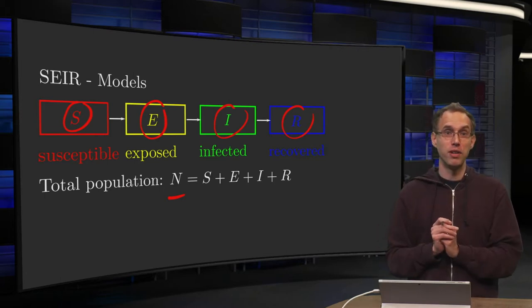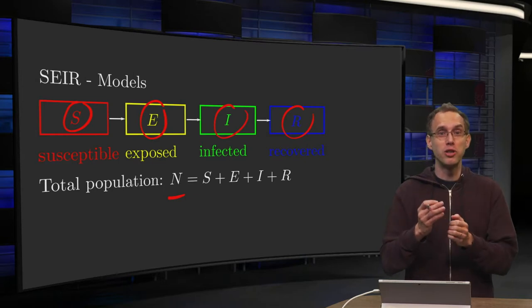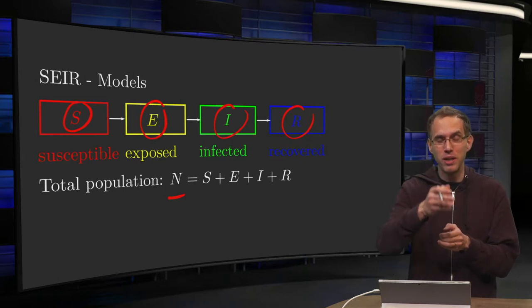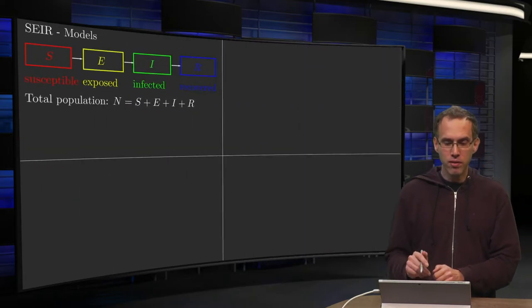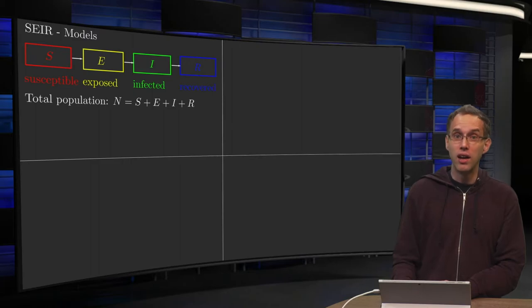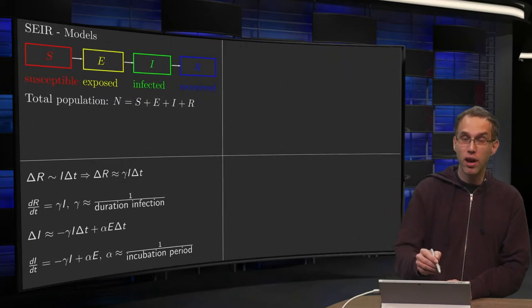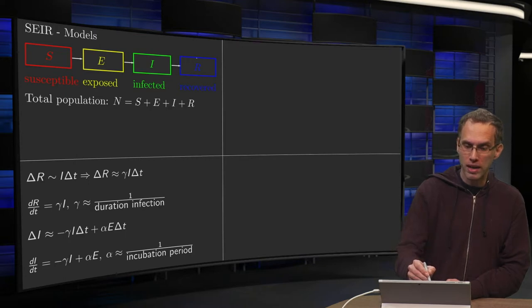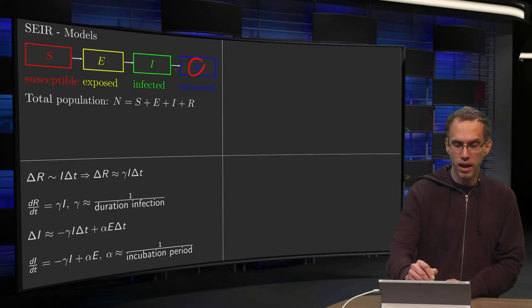So initially everybody starts in the S group. Now I want to model how a transition from S to E, E to I, I to R can be modeled. We will start with the last step. That's the easiest one. So how do you enter the R group? So this arrow over here. How do you go from I to R?